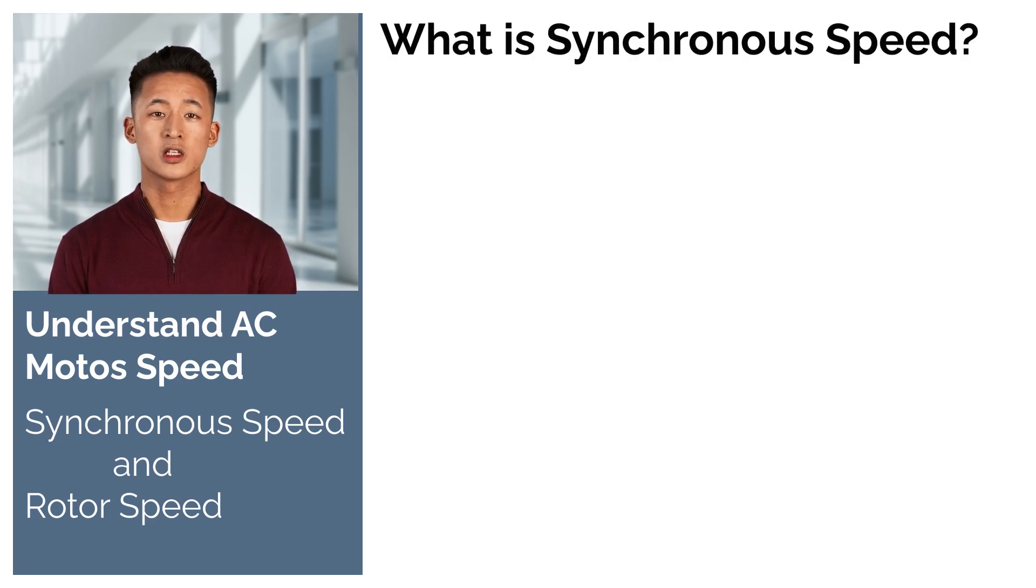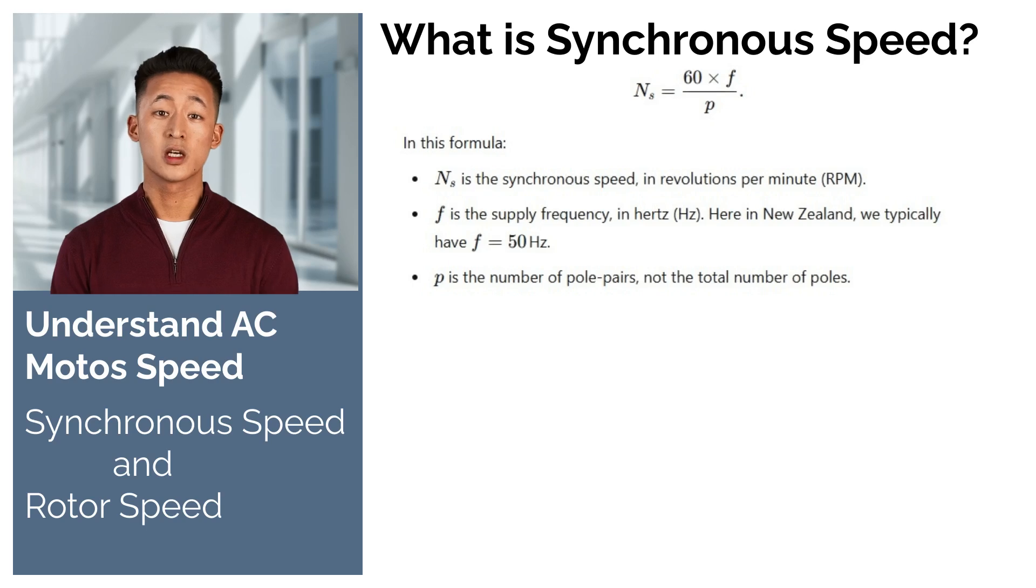What is synchronous speed? Synchronous speed is the speed at which the magnetic field created by the stator of an AC motor rotates. It represents how many times the magnetic field rotates per minute. The formula for calculating synchronous speed in an AC motor is: synchronous speed equals 60 times the supply frequency divided by the number of pole pairs.